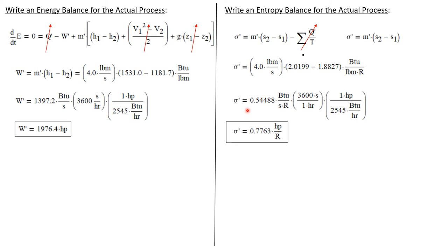Calculating, the rate of entropy production is 0.5488 BTU/(s·°R). Converting to horsepower using the same conversion factors, the rate of entropy production for this process is 0.7763 horsepower per degree R.